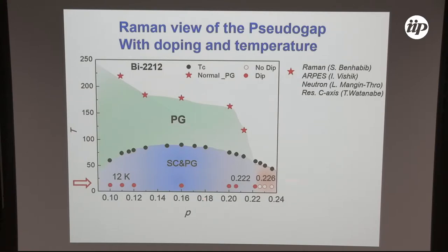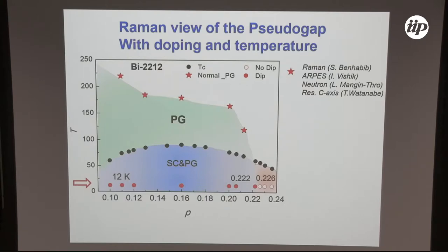We observe the disappearance of this dip inside the superconducting state. The red star here corresponds to the pseudogap endpoint measured by the depletion in the normal state, as shown before. This measurement has been confirmed by ARPES, neutron scattering, and C-axis resistivity — all showing exactly the same behavior — and all performed on the same Bismuth-2212 compound.